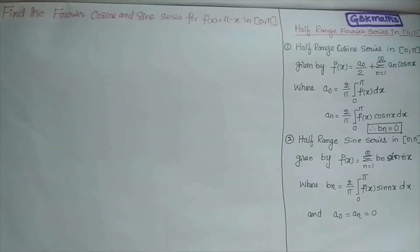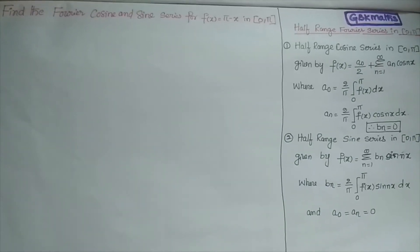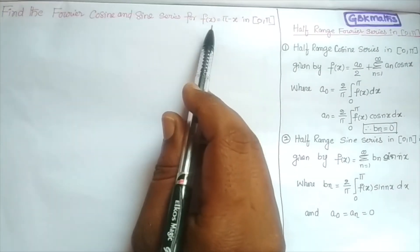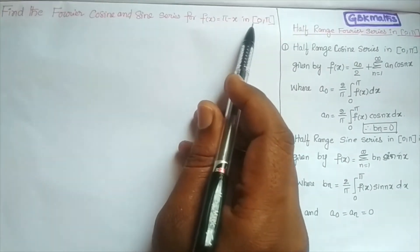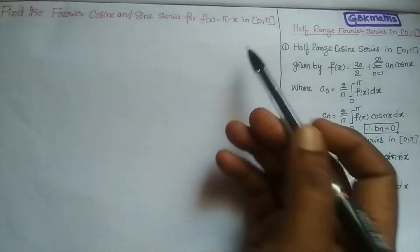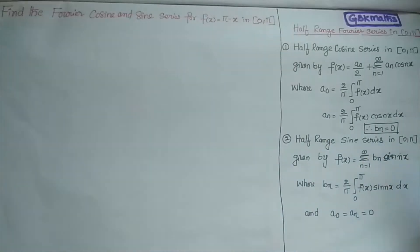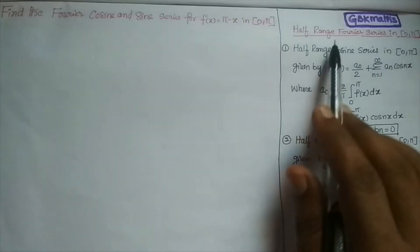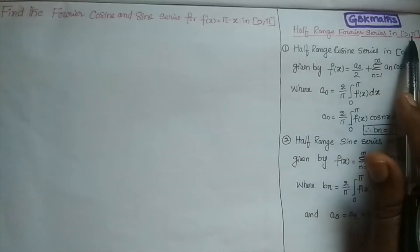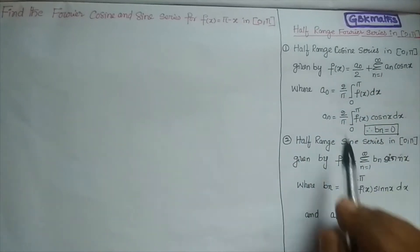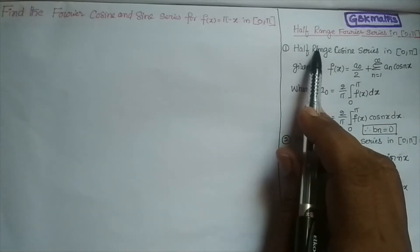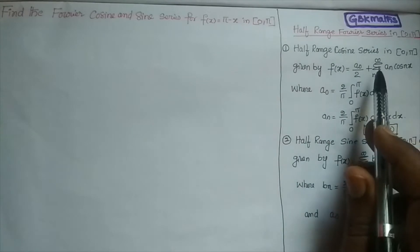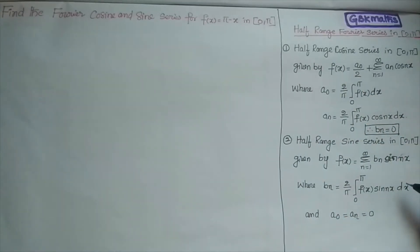Friends, now I am taking: find the Fourier cosine and sine series for the function f(x) = π - x in the interval (0, π). So before we go to this problem, let us recall and remember two formulas — half range Fourier series in the interval (0, π). They clearly mention in the problem half range Fourier sine or half range Fourier cosine, then only we have to follow these formulas.